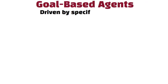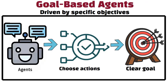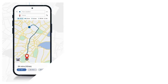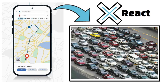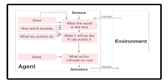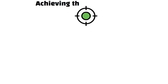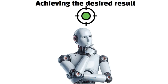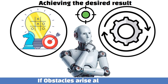Goal-based agents are driven by specific objectives. They are designed to choose actions that help them achieve a clear goal. For example, a navigation app on your phone doesn't just react to traffic — it actively calculates the best route to get you to your destination. These agents evaluate the outcomes of different actions based on how well they move toward the goal. The focus is on achieving the desired result, which means they may consider various strategies and change plans if obstacles arise along the way.